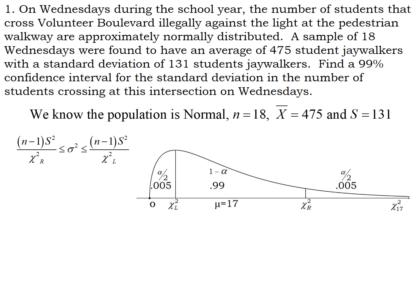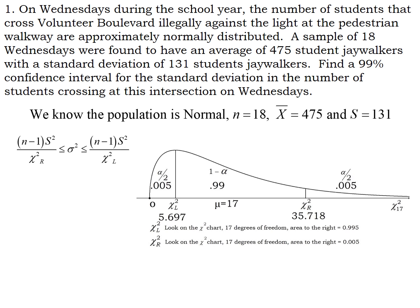We're going to use the chi-squared chart. For each cutoff we need to know the area to the right of that chi-squared score. The area to the right of the right chi-squared score is 0.005, and the area to the right of the left chi-squared score is 0.995. We look those up on the chart and get our two chi-squared scores. You should be familiar with this from past work in the class.